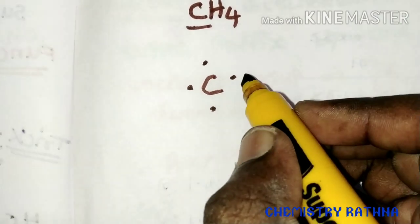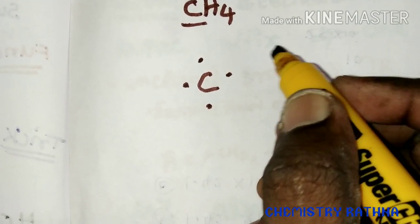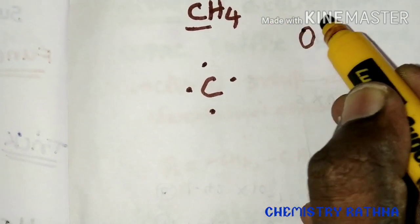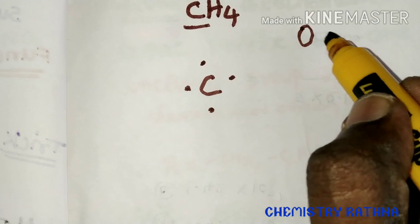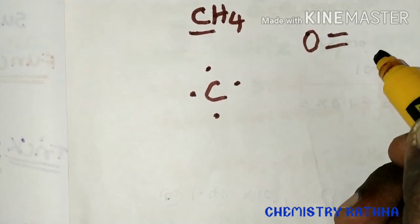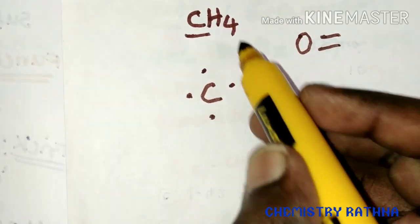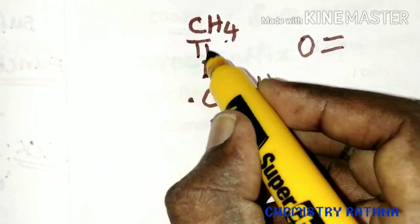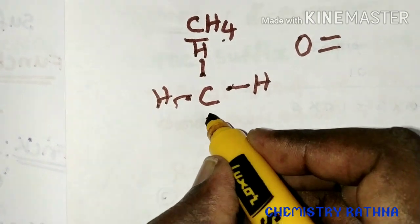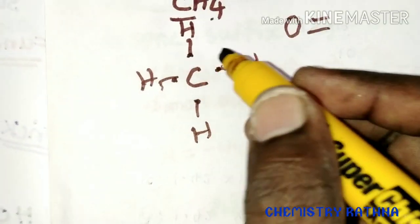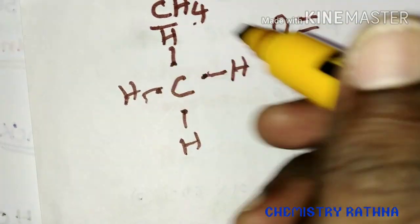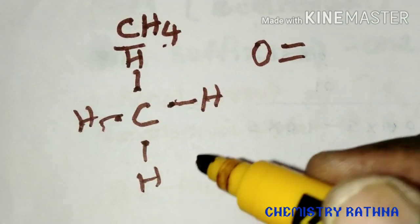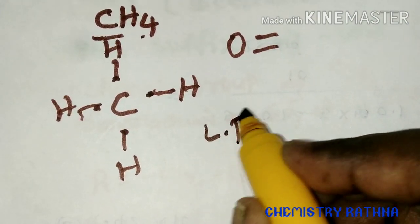Now, to find the valence electrons and bonding, we need to consider hydrogen. The bonds are going to be formed by single bonds. Hydrogen contributes one electron each. Now, are there any electrons involved in the bonding?